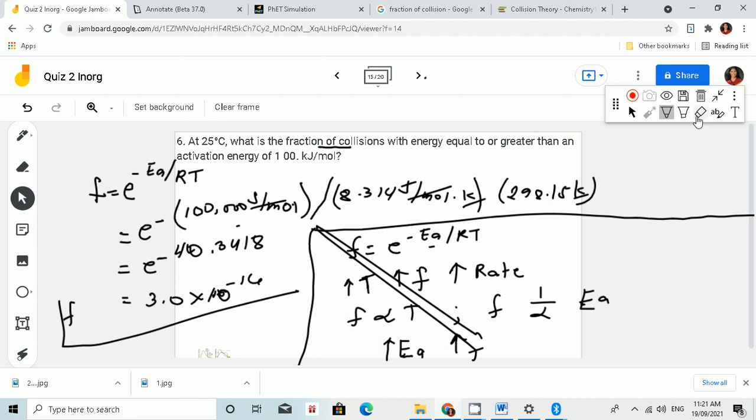then the fraction of collision will be lower. If the activation energy is very high, only few particles can meet the requirements. So only a small fraction of collisions will occur. Therefore, there will be a lower rate.